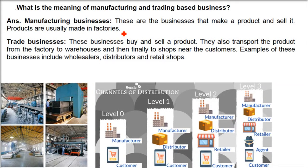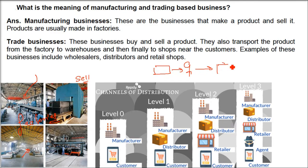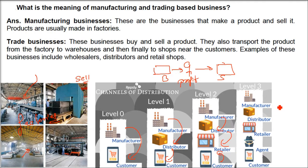What is the meaning of manufacturing and trading-based business? Manufacturing business: products are made and sold — usually in factories or manufacturing units. Trade business: these businesses buy and sell products — a person buys something and sells it somewhere else; in between, the goods are transported and profit is made. Level 0 is manufacturing to customer directly. Level 1 is manufacturing to distributor then to customer. Level 2 is manufacturing to distributor to retailer to customer. Level 3 is manufacturing, distributor, retailer, agent, then customer. Wholesalers, distributors, and retail shops are all involved.